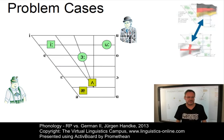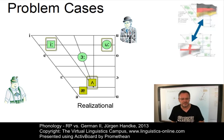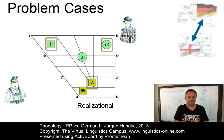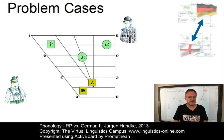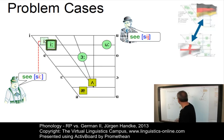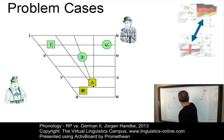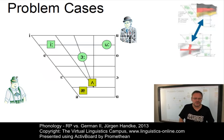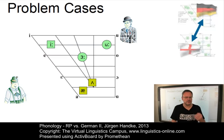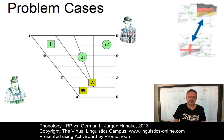But what about the problem cases? These five RP monophthongs are problematic for German learners of English. Three of them can be defined as realisational problems and two are clearly inventorial. The two high vowels — E as in SEE and U as in TOO — are often produced too high, and Germans tend to produce monophthongal variants instead of the slight diphthongal realization in RP.